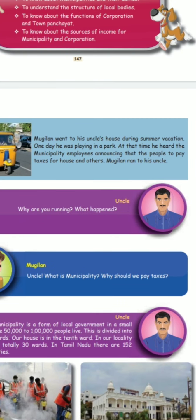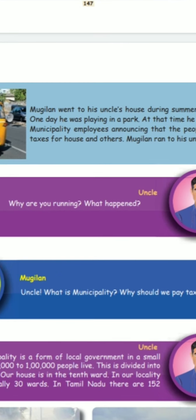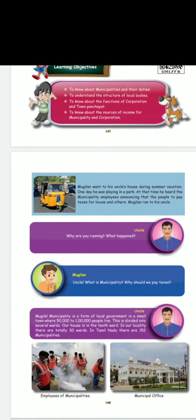Mugilan went to his uncle's house during a summer vacation. He was playing in a park when he heard a municipality employee announcing that people should pay taxes for their house and other things. Mugilan wanted to know what a tax is, so he ran to his uncle and asked him. His uncle began explaining what a municipality is and what a tax is.